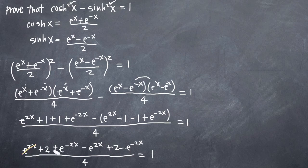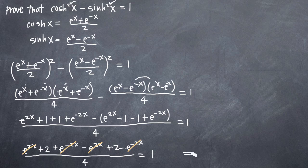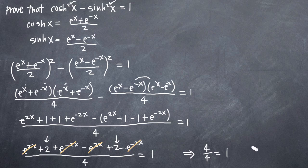Now if we start canceling terms, we can see that e to the 2x minus e to the 2x cancels, and e to the negative 2x minus e to the negative 2x cancels. All we're left with is the 2 and the 2, so we end up with 4 over 4. And that's equal, of course, to 1. So we get 1 equals 1.